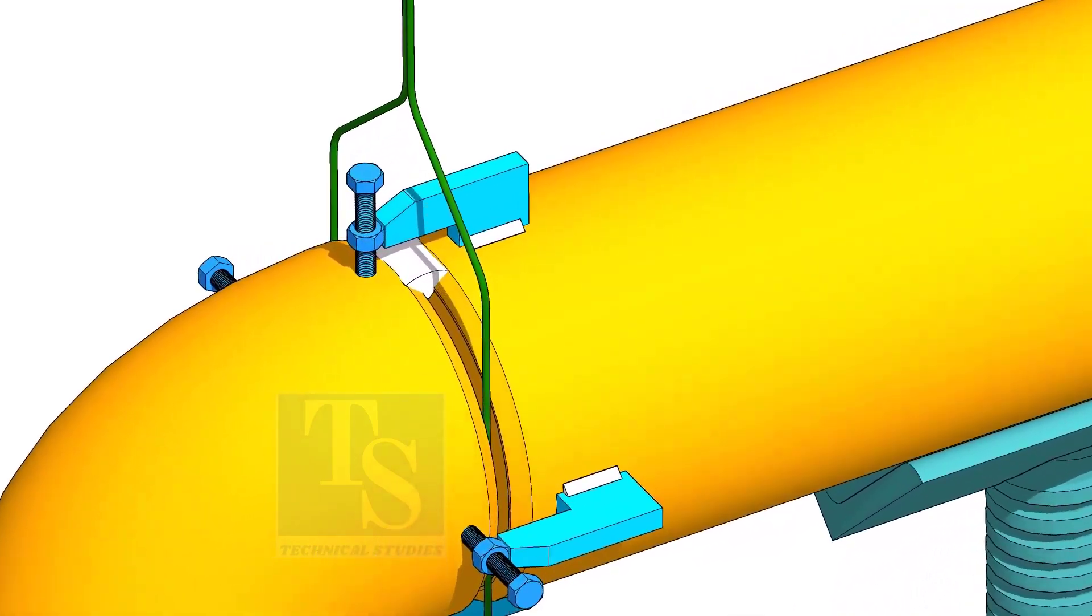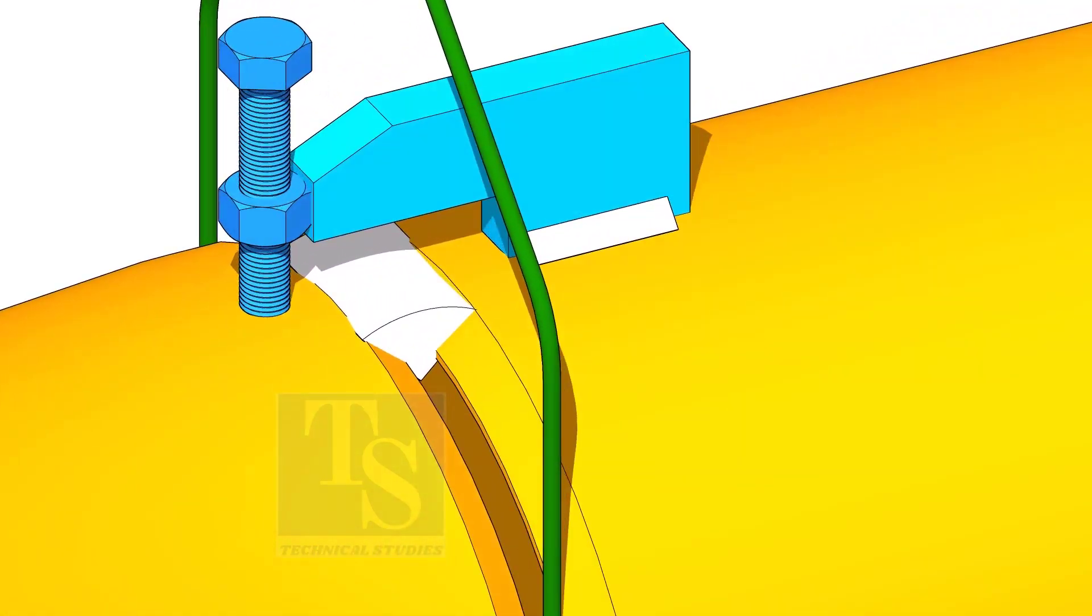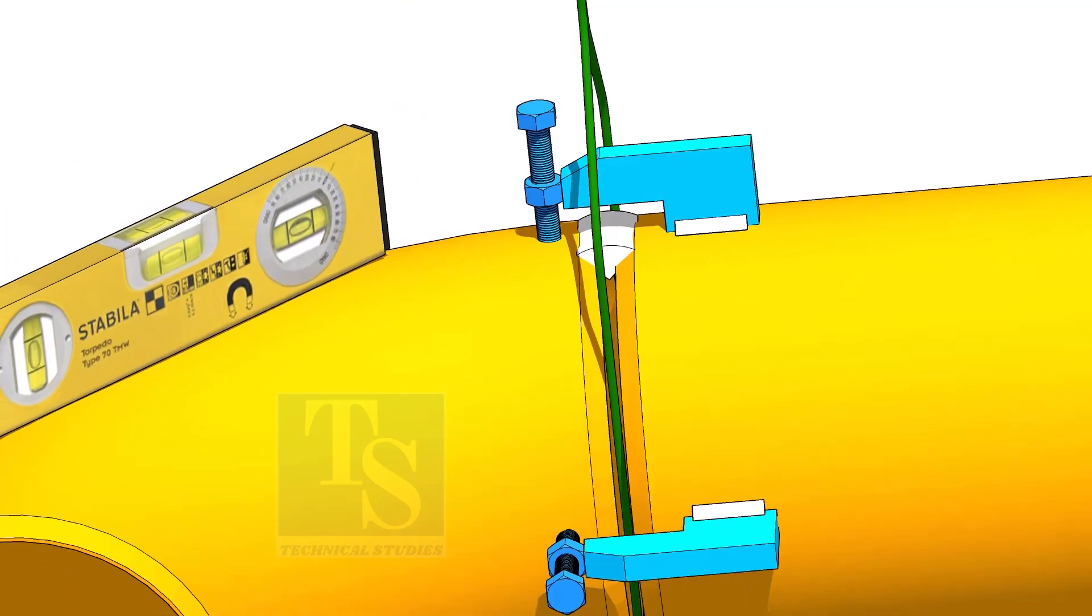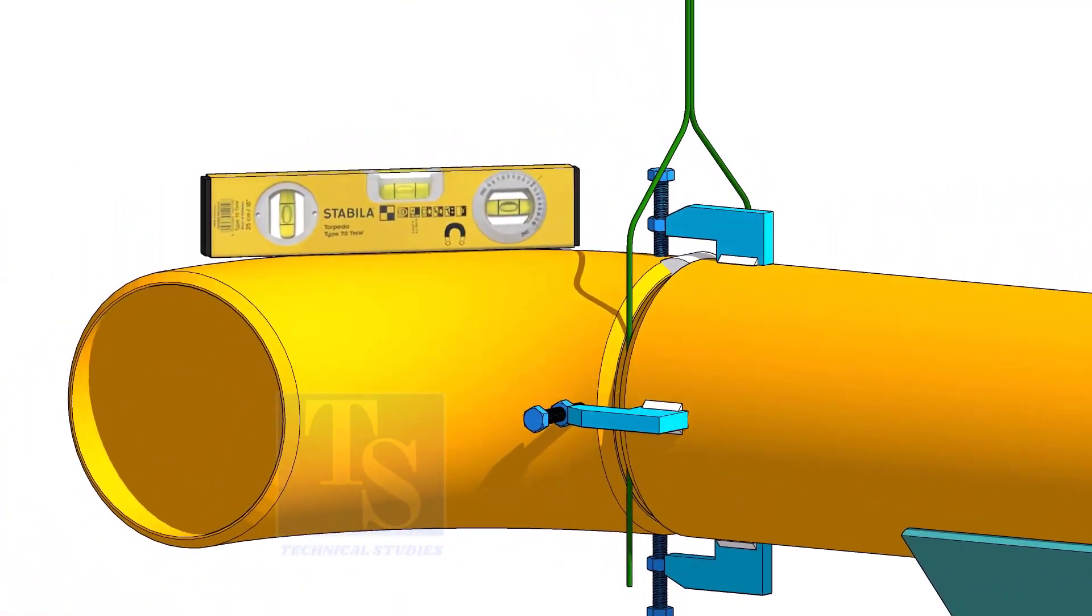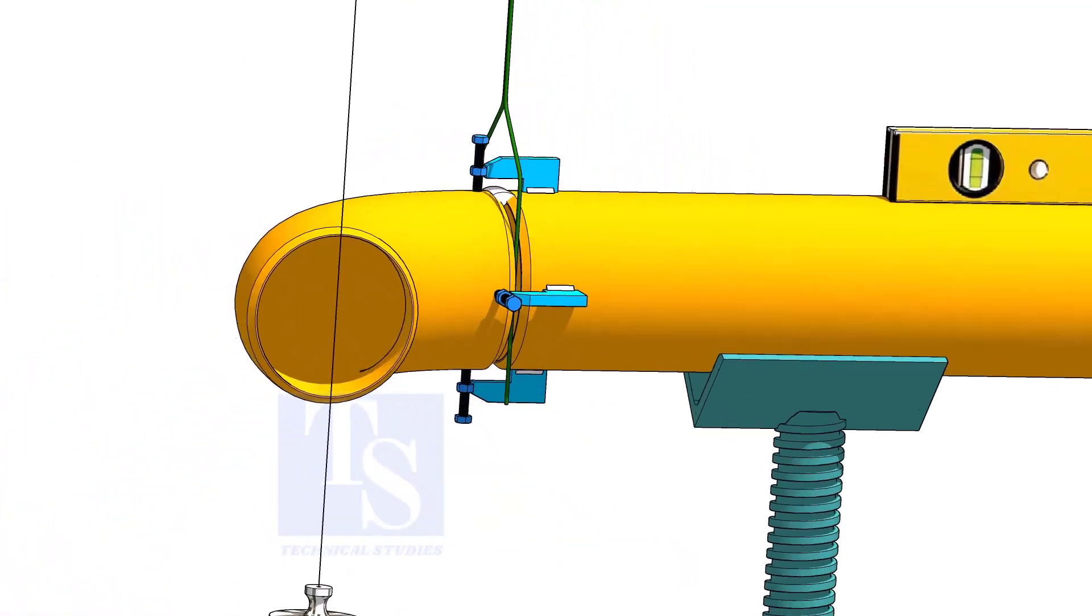Tack weld on the top of the joint. Check the top level of the elbow.